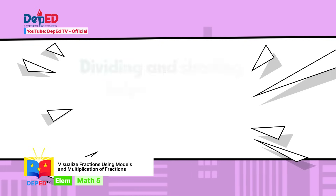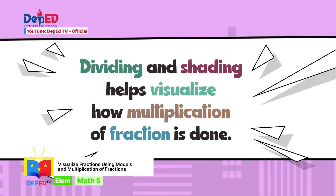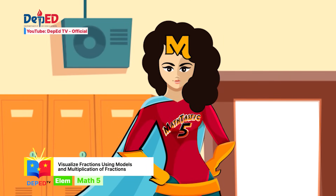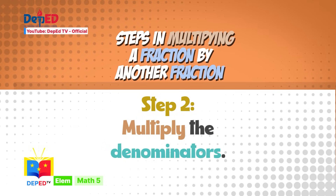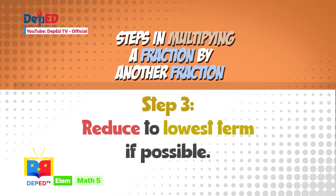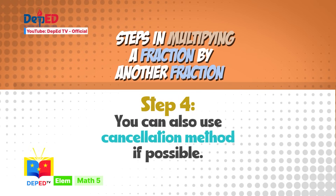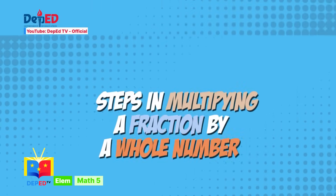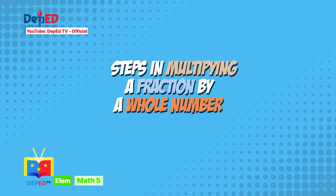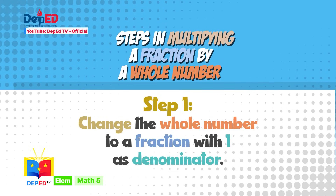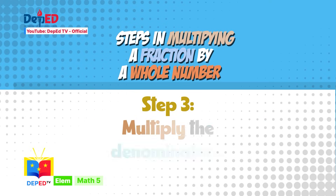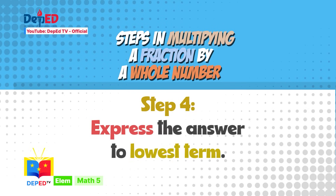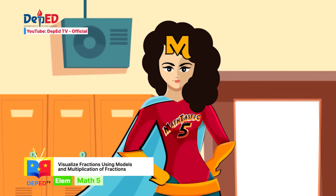Dividing and shading helps visualize how multiplication of fractions is done. To multiply a fraction by another fraction: number one, multiply the numerators; number two, multiply the denominators; number three, reduce to lowest term if possible; number four, you can also use the cancellation method if possible. To multiply a fraction by a whole number: number one, change the whole number to a fraction with one as the denominator; number two, multiply the numerators; number three, multiply the denominators; number four, express the answer in its lowest term.